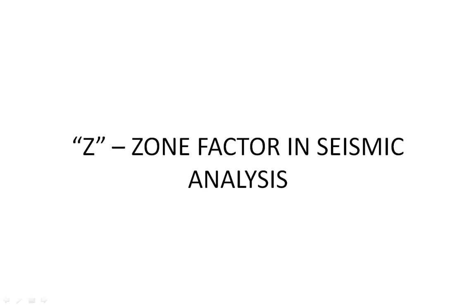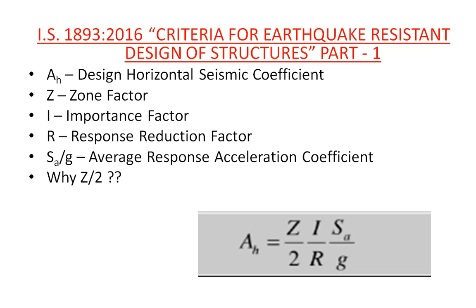Hello friends, today I am going to talk about Zone Factor Z used in the calculation of seismic forces in seismic analysis. I start off with a formula given by IS 1893:2016, Criteria for Earthquake Resistant Design of Structures, Part 1: General Provisions and Buildings. In this IS code, there is a formula for calculation of design horizontal seismic coefficient AH, which is given by Z/2 × I/R × SA/G.